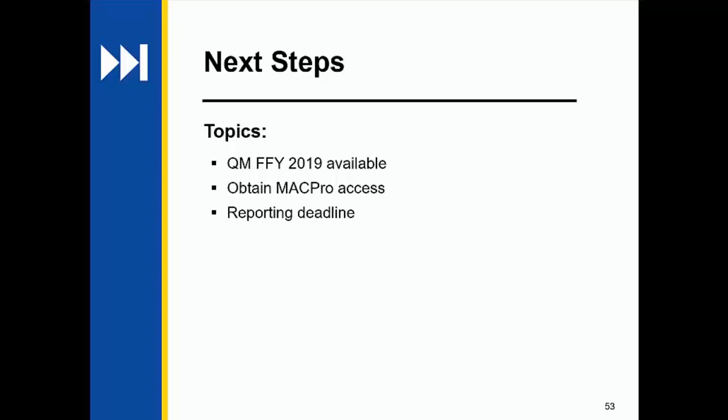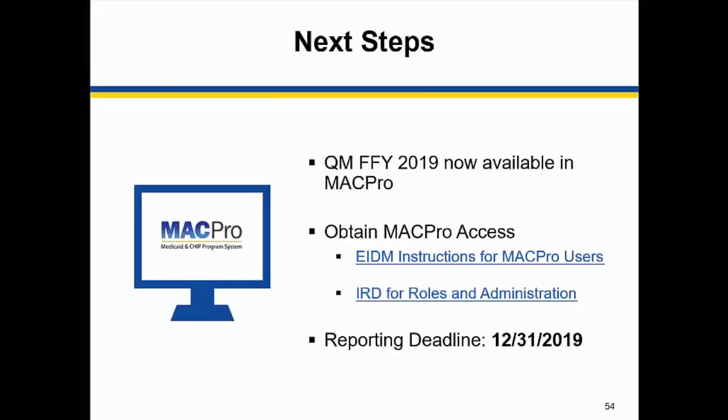Let's talk about next steps. As we mentioned at the start of our training, quality measures for Federal Fiscal Year 2019 is now available in MACPro. If you do not already have an EIDM ID or MACPro access, we recommend that you do that soon. Instructions providing an overview to gaining access to MACPro through the CMS Enterprise Portal are located on Medicaid.gov via the links on this slide. As a final reminder, the reporting deadline is December 31, 2019.